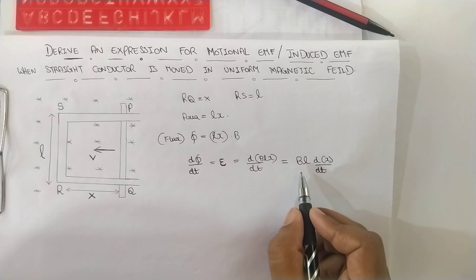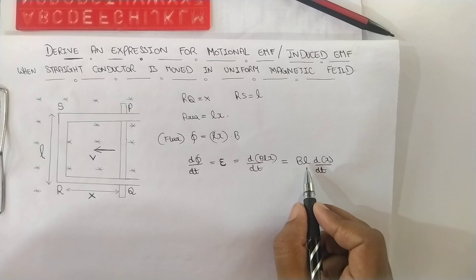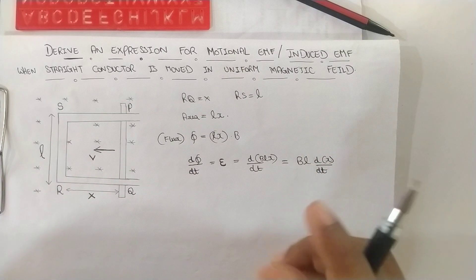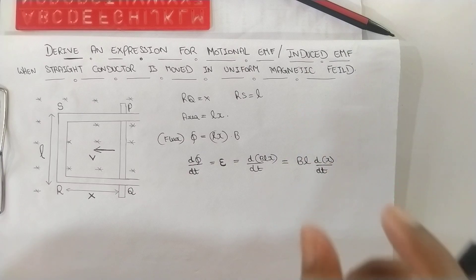B L is taken outside. Why? Because B is a magnetic field which is a constant and L is the length of the rectangular conductor which is also a constant. For a particular rectangle, we will have a constant length and constant breadth.